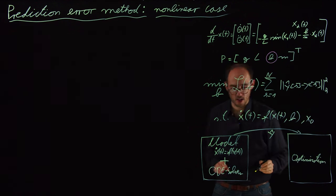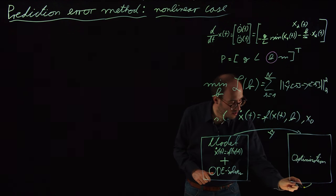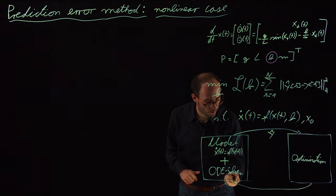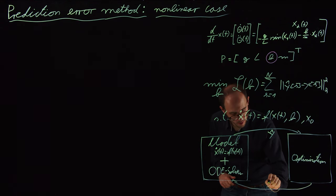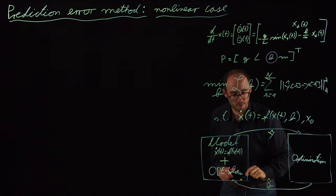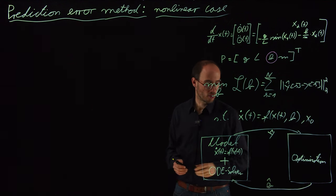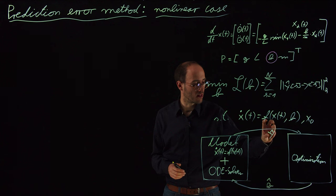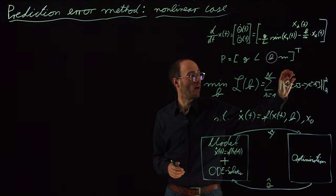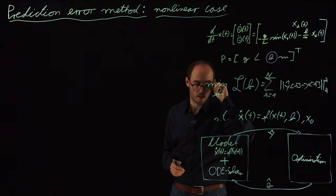So some optimization package from Julia, for example, and this will solve for B hat or B such that this error between the estimated Y and our artificial data of Y is minimized over time.